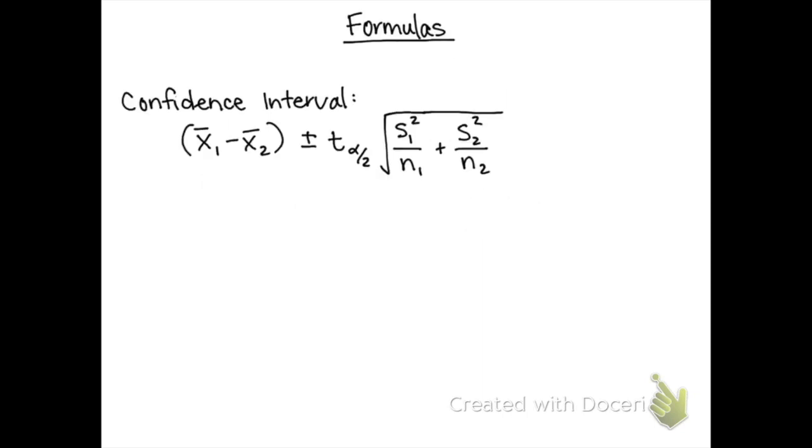Here's the formula for constructing the confidence interval for two means. We need to start with our point estimate at x̄₁ minus x̄₂, and then from that we add and subtract the margin of error, which is our critical t score times the square root of the first sample standard deviation squared over the first sample size, plus the second sample standard deviation squared over the second sample size.